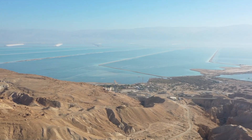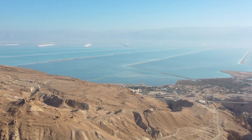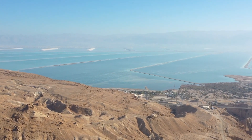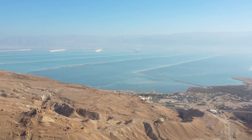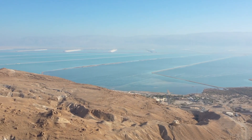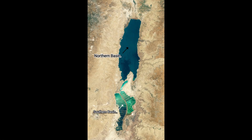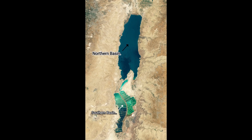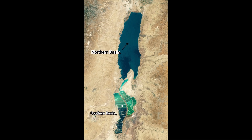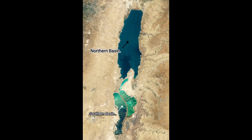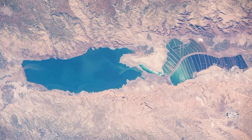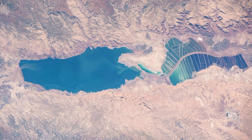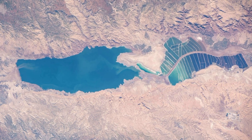Due to the continuous fall in water levels during the mid-1970s, a stretch of dry land emerged in the Dead Sea, which divided it into two parts: a northern deepwater basin and a much shallower southern basin. The northern basin is what we can consider the true Dead Sea.